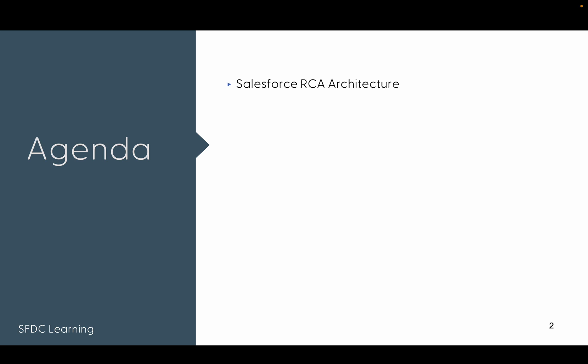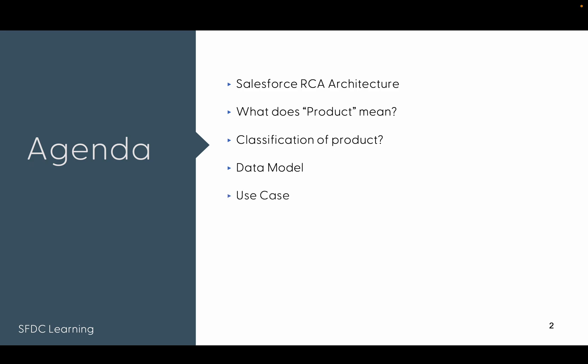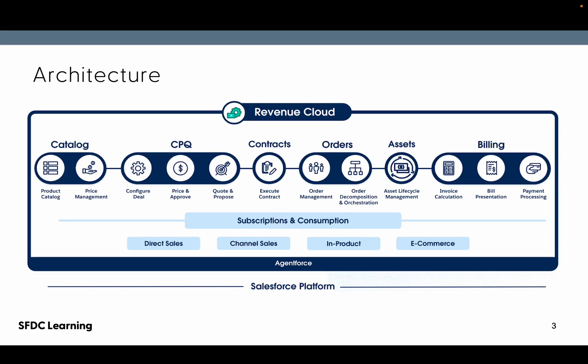Here is the agenda. First we are going to see the architecture of Salesforce RCA, then what does a product mean, then the classification of products, then we'll see the data model — which is how a product can be configured — and we'll see a use case and configure the product in the system itself.